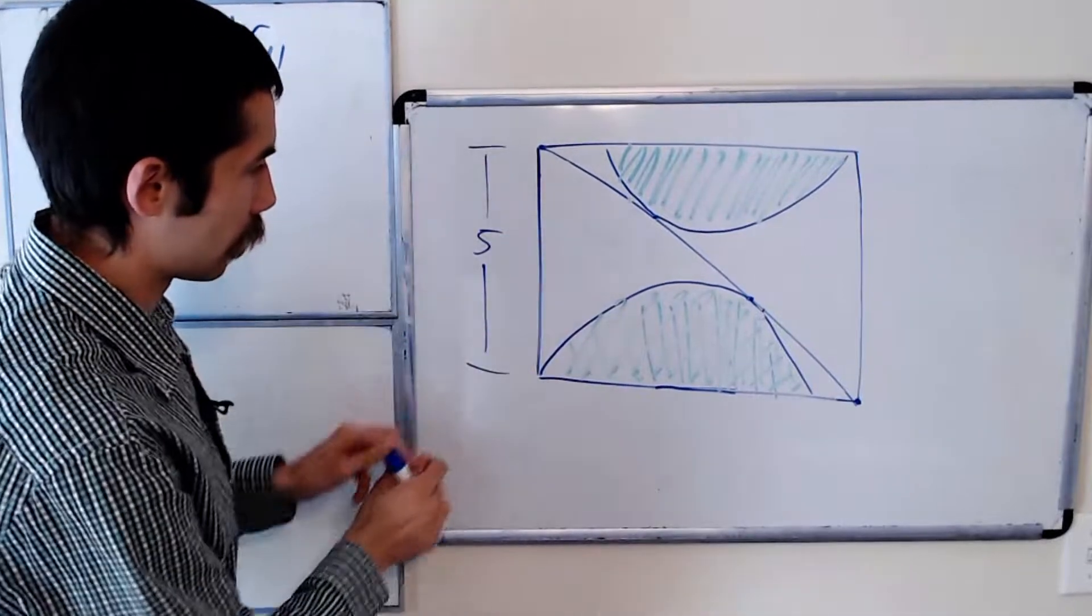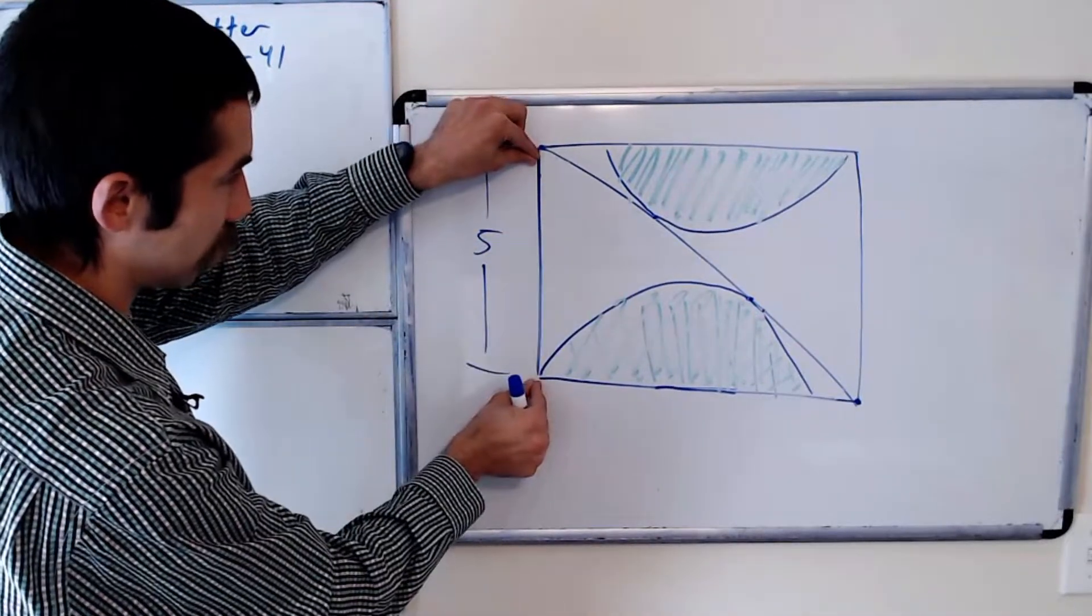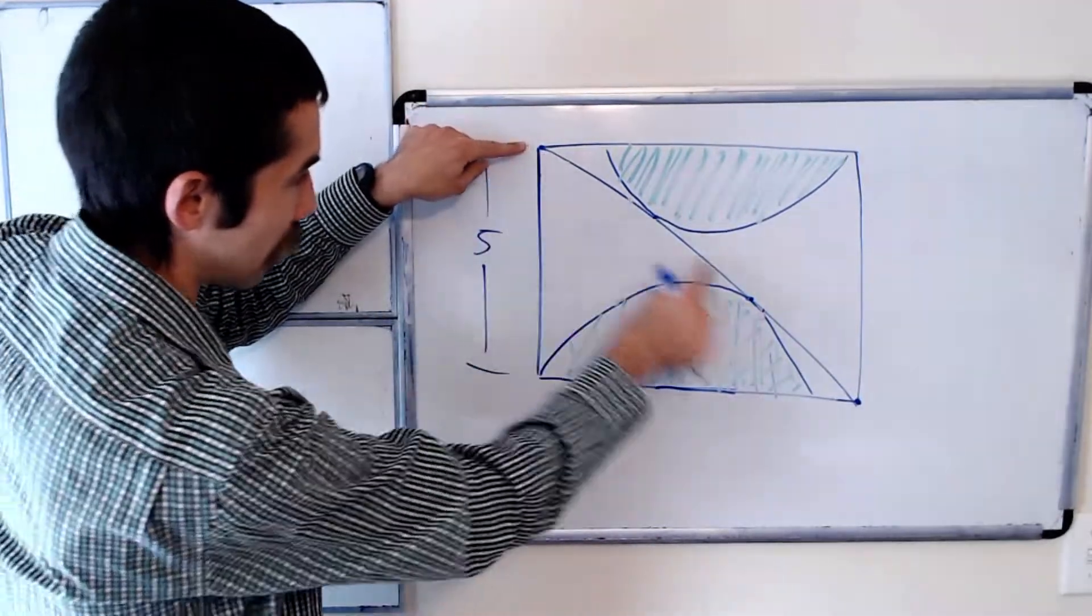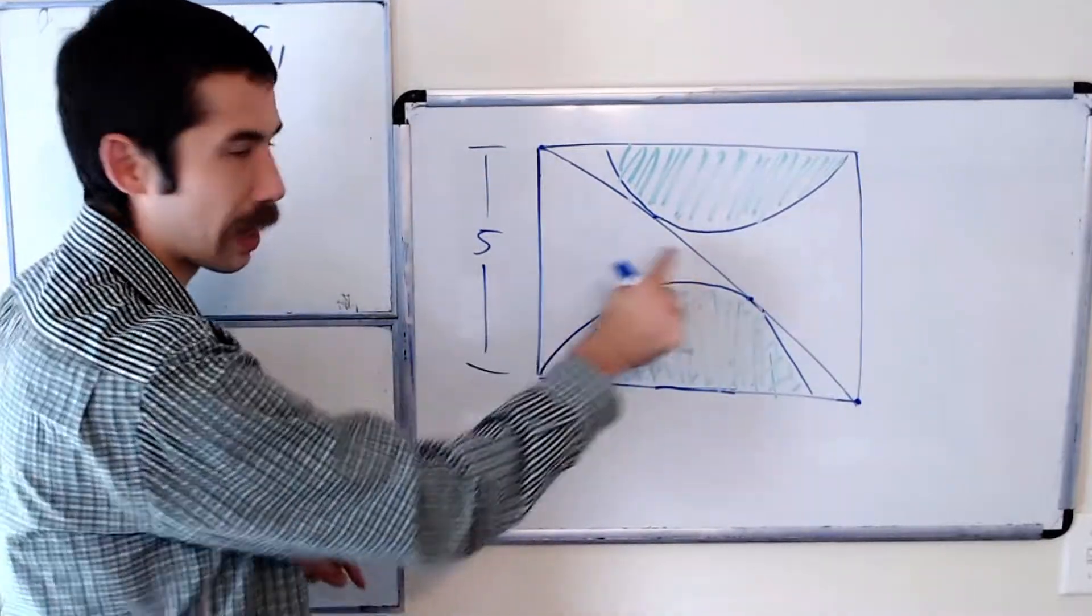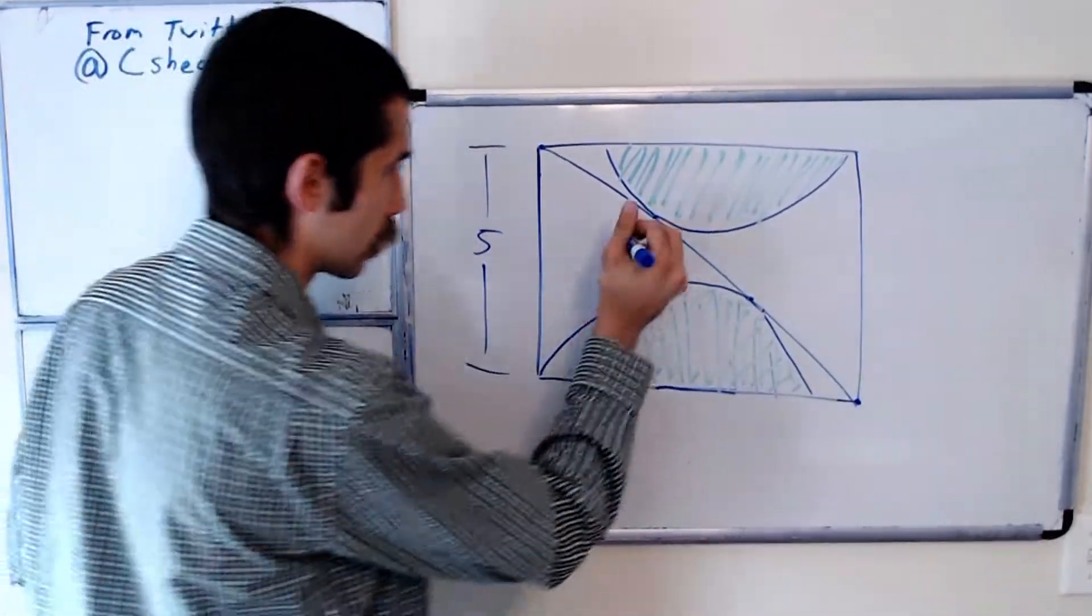The first thing to note is that since this is a tangent coming from the same point as this tangent, these are the same lengths. That's a geometry fact. So this is 5.